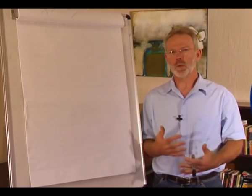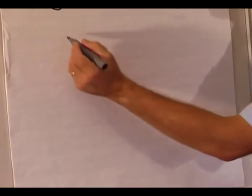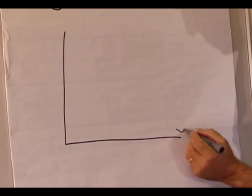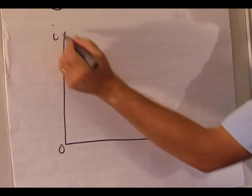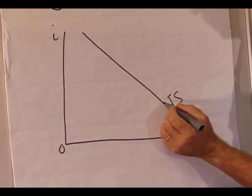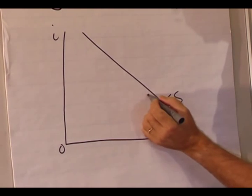If government wants to increase its surplus, government must either spend less or receive more. So government spending must decrease or taxes must increase. A decrease in government spending and an increase in taxes will decrease the demand for goods and services. Therefore, the IS curve will shift to the left.